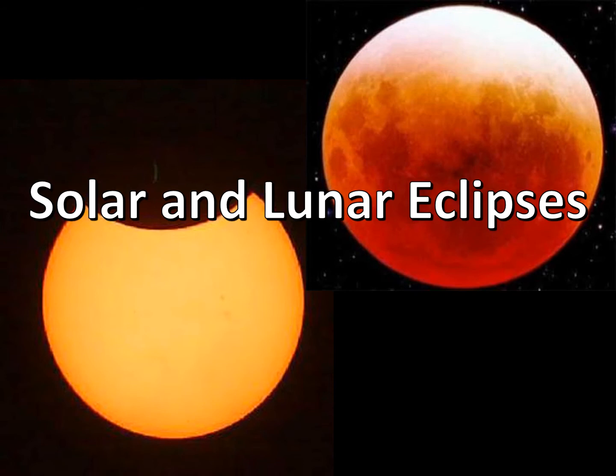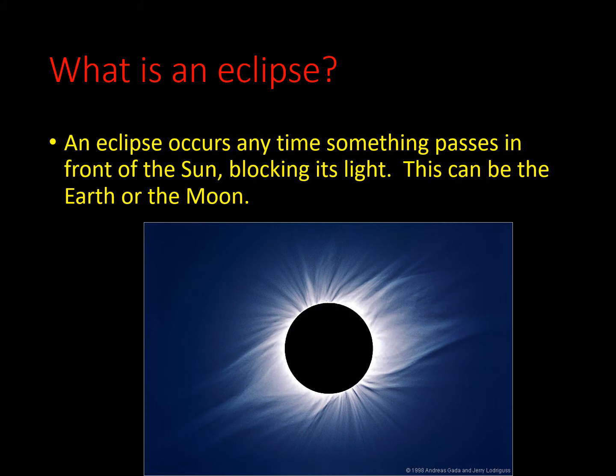Now let's move to solar and lunar eclipses. An eclipse occurs anytime something passes in front of the sun, blocking its light. This can be the earth or the moon.